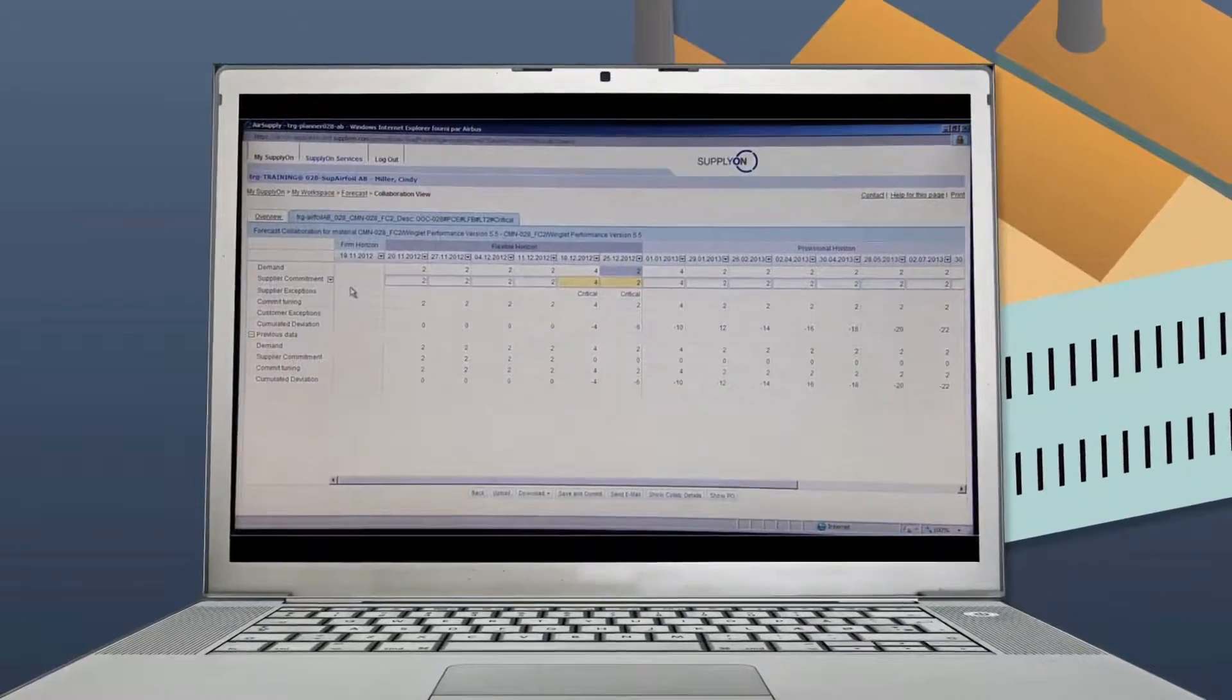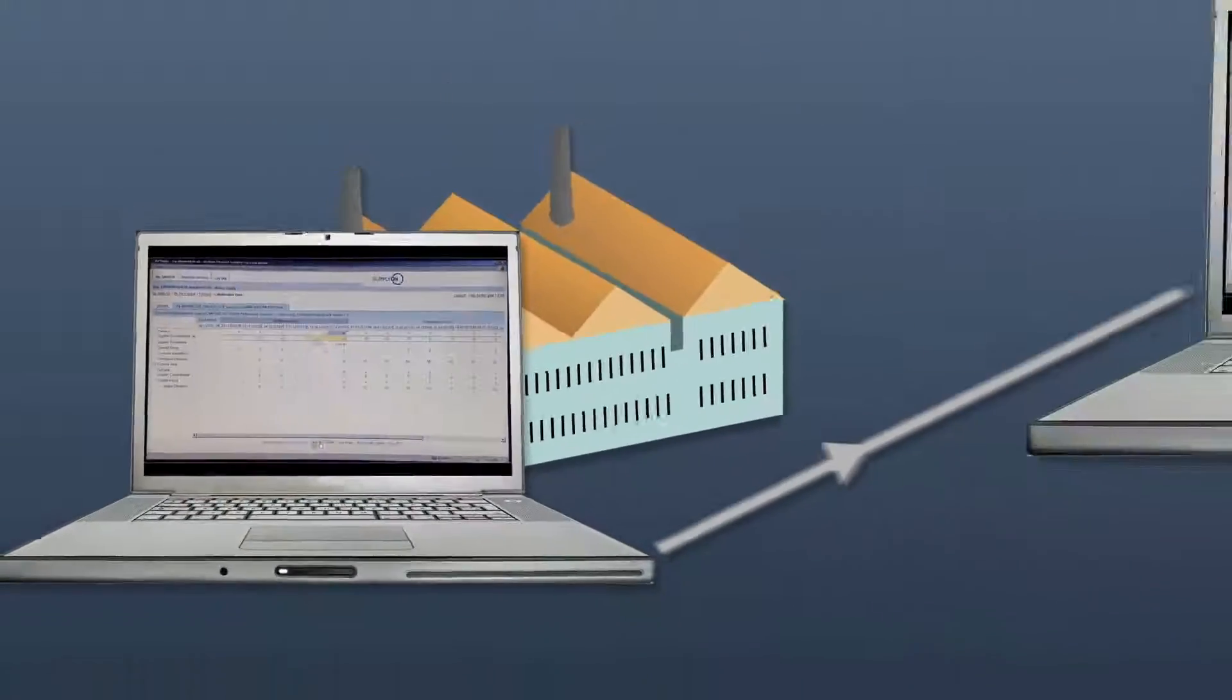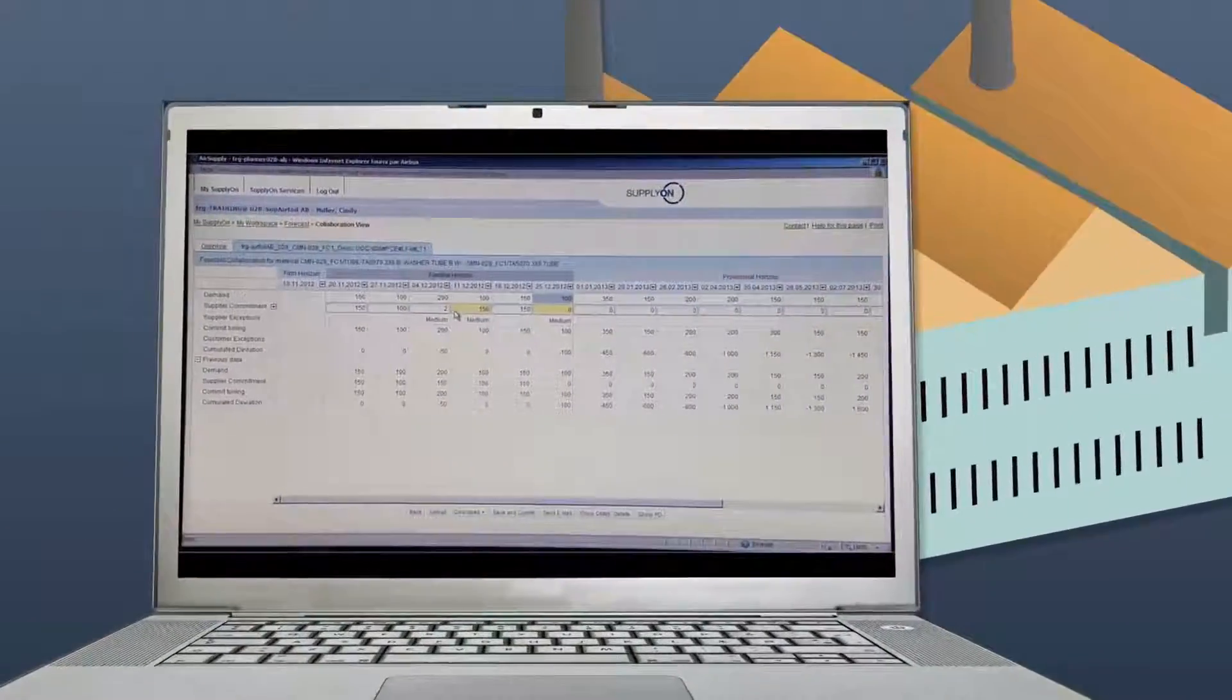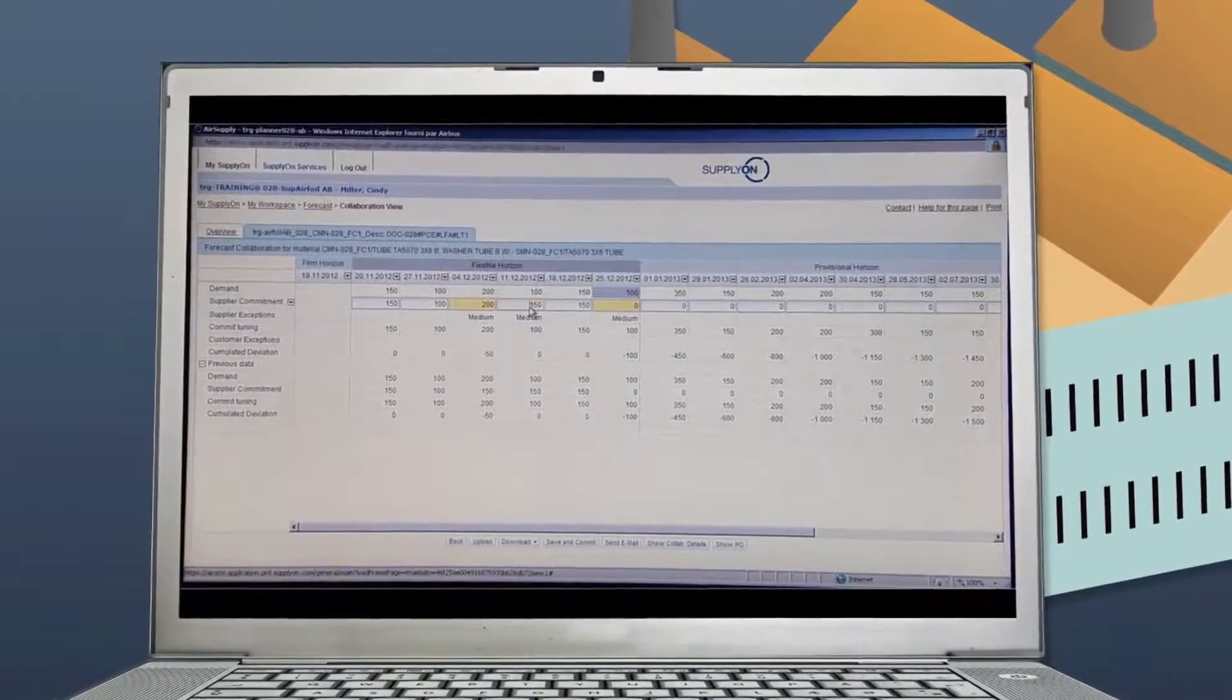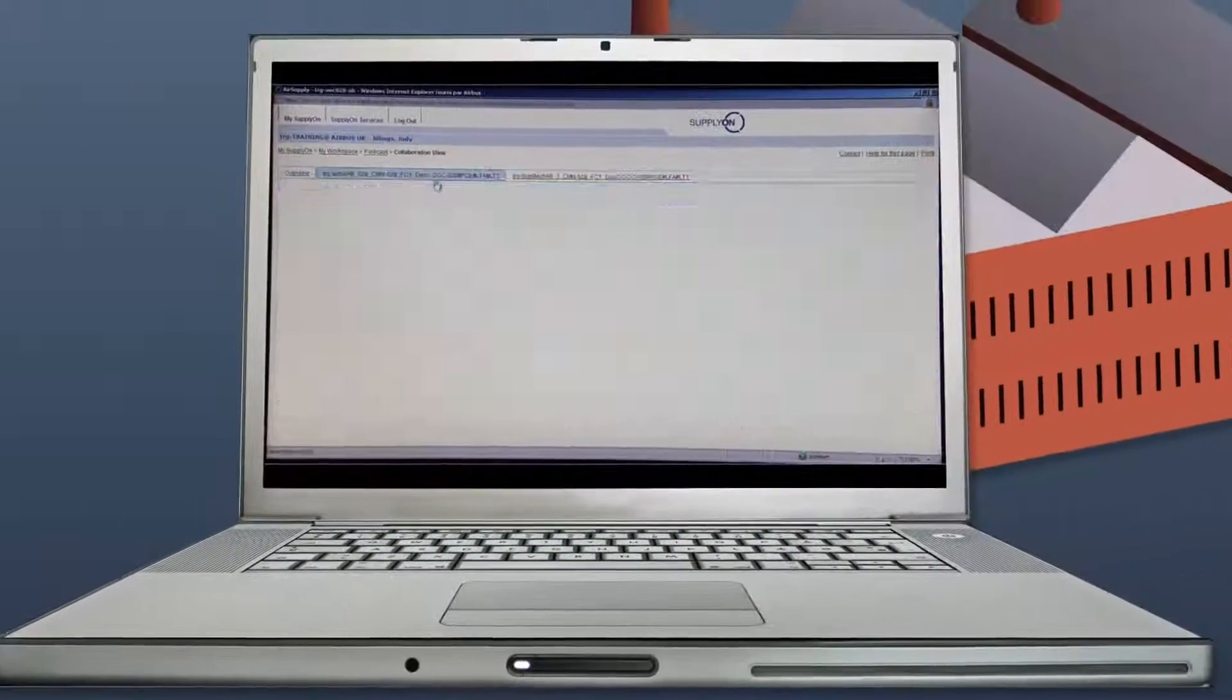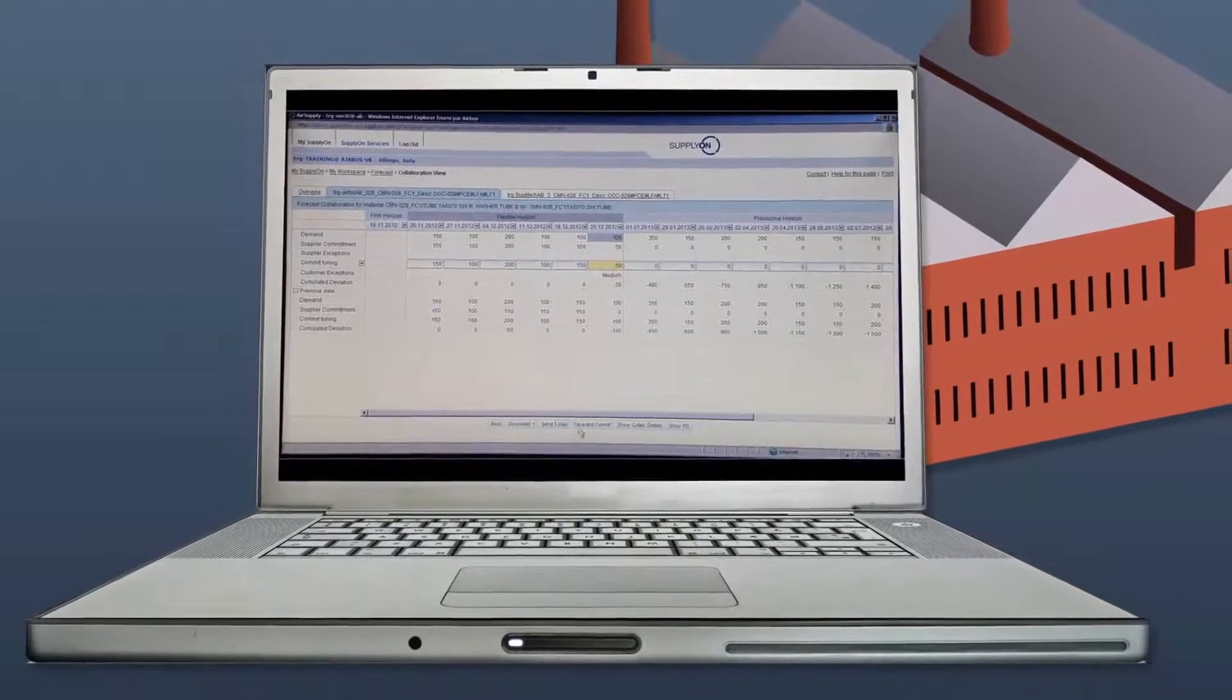The supplier now checks whether he can provide what is needed by the customer. If the answer is yes, he sends a commitment. If the answer is no, he can use AirSupply to propose alternative quantities and delivery dates. The customer then checks the supplier's proposal and agrees. The collaboration process has now been successfully completed.